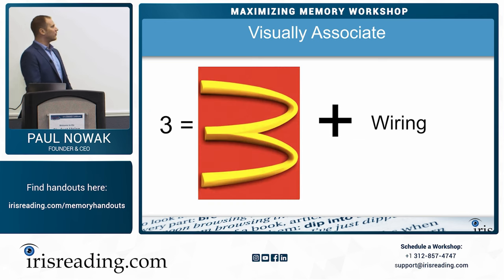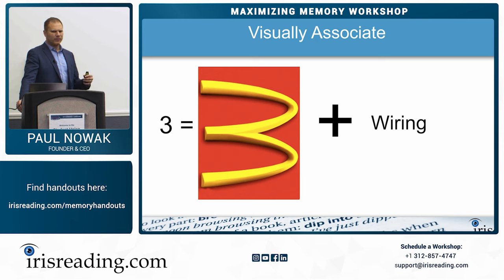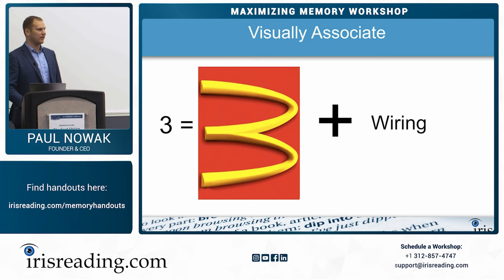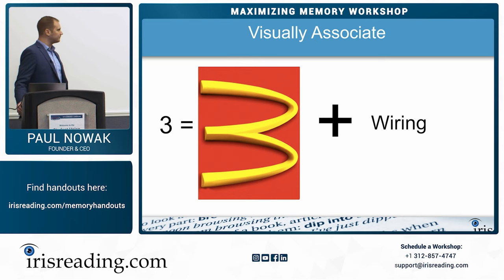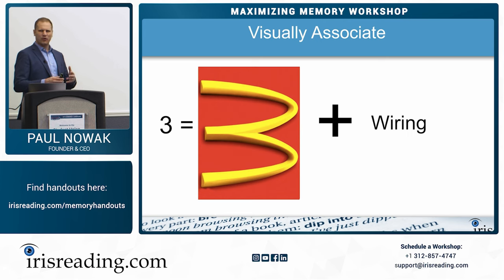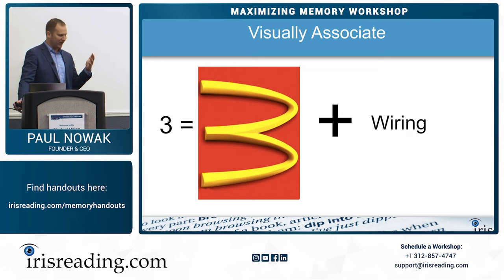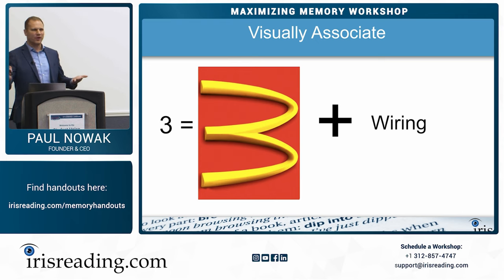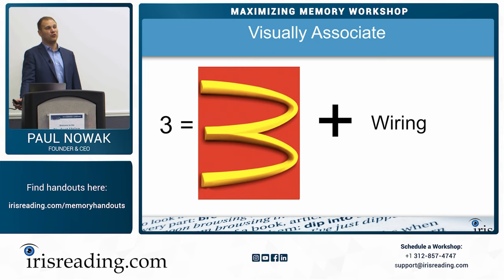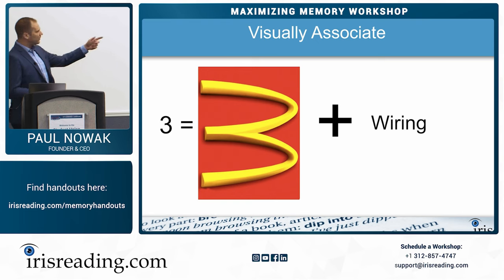Three is McDonald's, and we have to remember wiring — brain rule number three. Imagine you go to McDonald's, get a Big Mac, bite into it, and you notice there is a piece of barbed wire in the Big Mac. Imagine the pain, how disgusting that would be, how angry you would be. I'm asking you to imagine emotions too, because emotions play a part in memory. People who go through traumatic experiences remember a lot of detail. That's also why advertisers make you laugh, or political ads get people angry. Three is wiring — Big Mac with barbed wire.